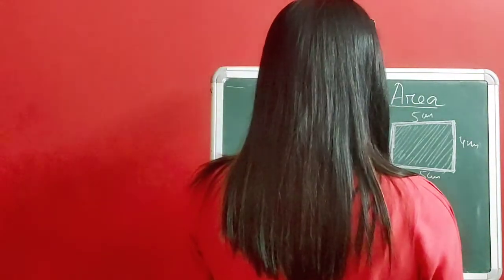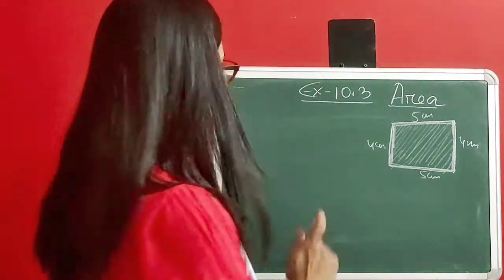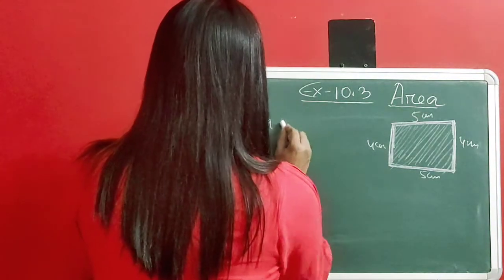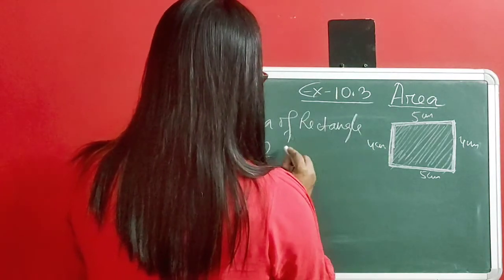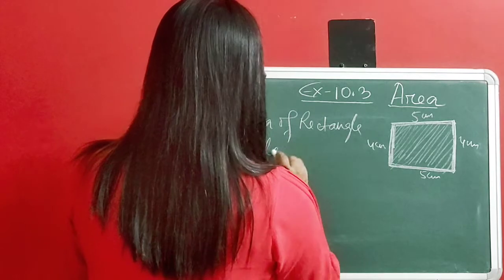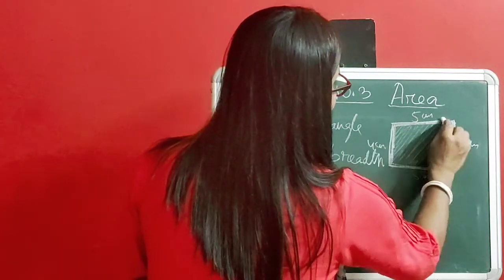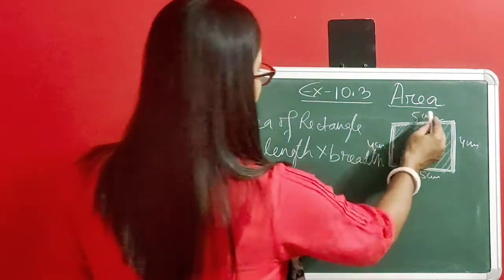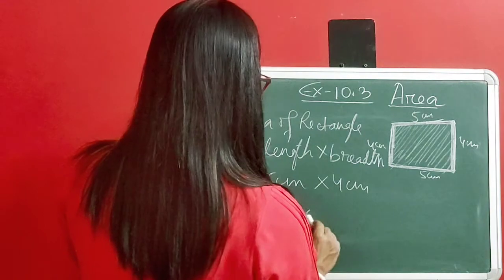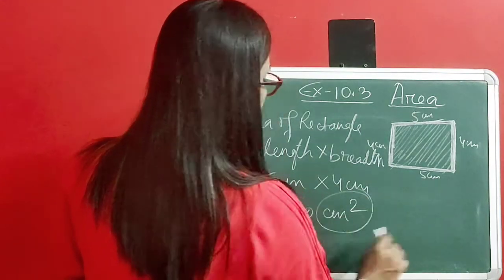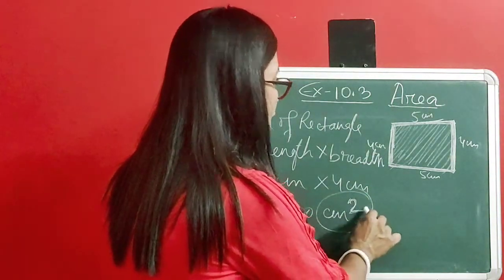For a rectangle, since opposite sides are equal, the area of a rectangle is equal to length into breadth. Here, 5 cm into 4 cm gives us 20 cm squared. So the area of this rectangle is 20 cm squared.